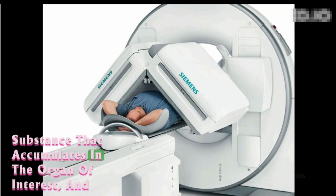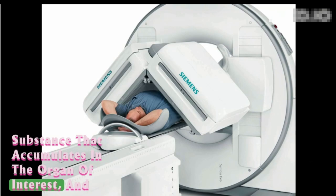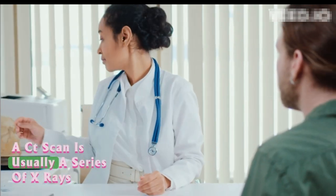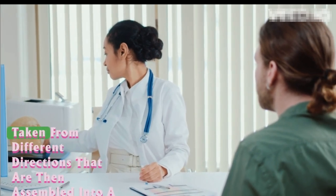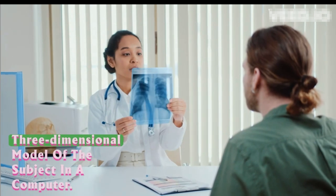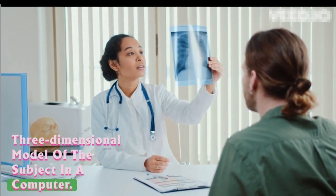A nuclear scan uses an injected gamma ray emitting substance that accumulates in the organ of interest, and a special camera records the gamma rays. A CT scan is usually a series of X-rays taken from different directions that are then assembled into a three-dimensional model of the subject in a computer.